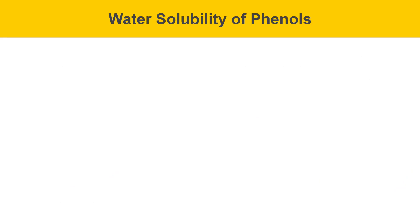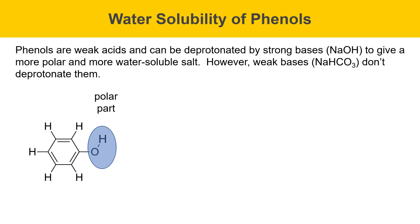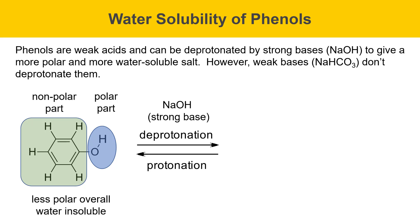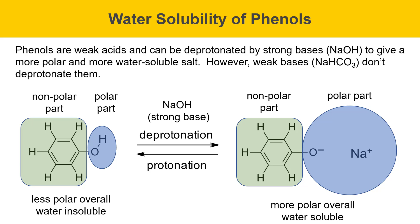Phenols are weak acids and can be deprotonated by strong bases like sodium hydroxide, giving a more polar and more water-soluble salt. However, a weak base like sodium bicarbonate doesn't have enough base strength to deprotonate them — that's why the solubility tests work the way that they do. Phenol has a polar OH group but a fairly large nonpolar part that dominates its solubility, making it water-insoluble. When put with sodium hydroxide, it's deprotonated to generate a phenoxide salt, which is much more polar overall and is water-soluble.